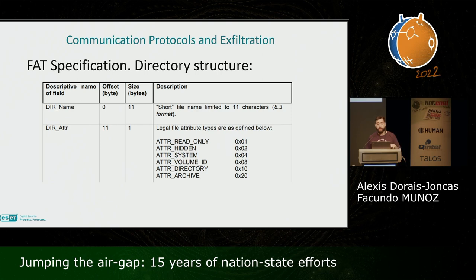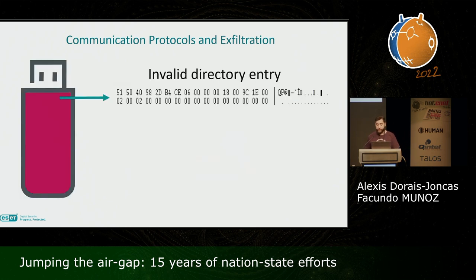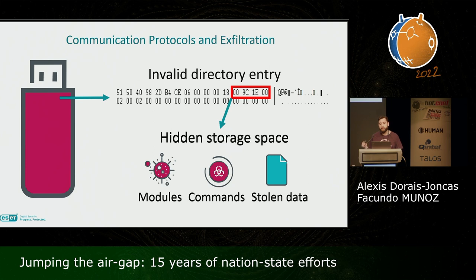They achieved this by creating a directory entry with a combination of two attributes that make it basically invalid for the parser. When Windows finds such an entry, it is ignored — essentially invisible to the user and to any other tool. This entry contains an offset to locate an allocated space of almost one megabyte, which contains collected information as well as commands, modules, and stolen data. It's also worth noting that Flame uses a similar trick, but instead of creating this directory, it directly creates a file with an invalid name — just a dot — that Windows ignores. That's a more optimized technique.